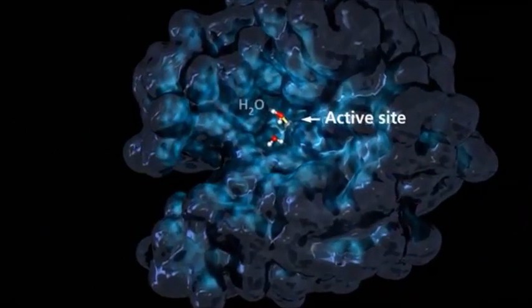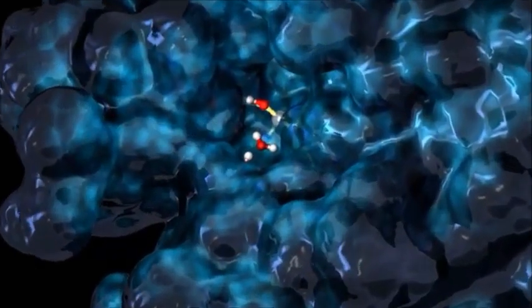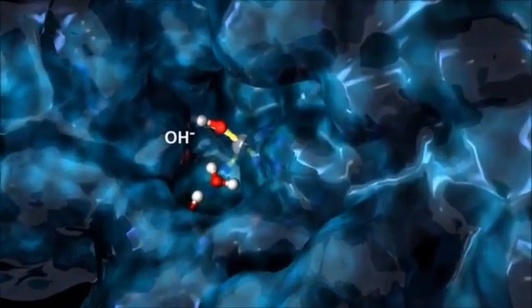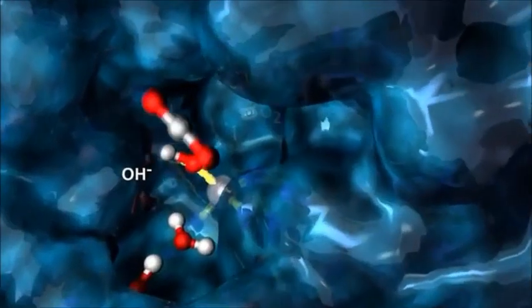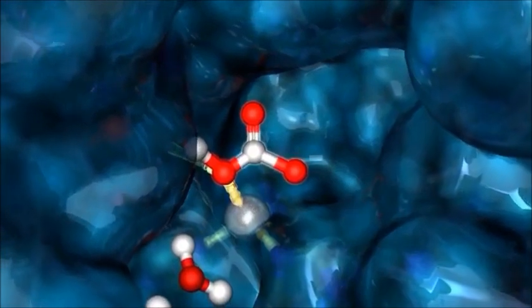A water molecule is coordinated to a zinc atom in the protein. A proton is removed, leaving a hydroxide ion. Carbon dioxide binds to the hydroxide ion on the zinc and the product is released.